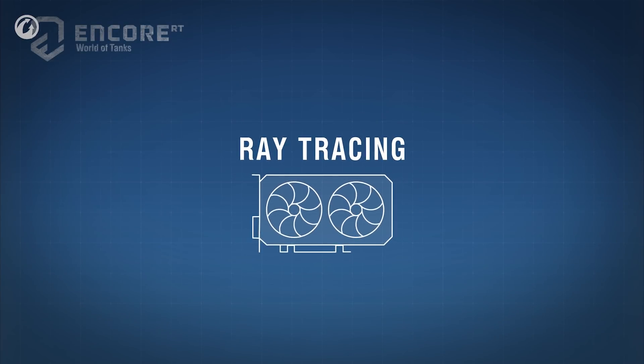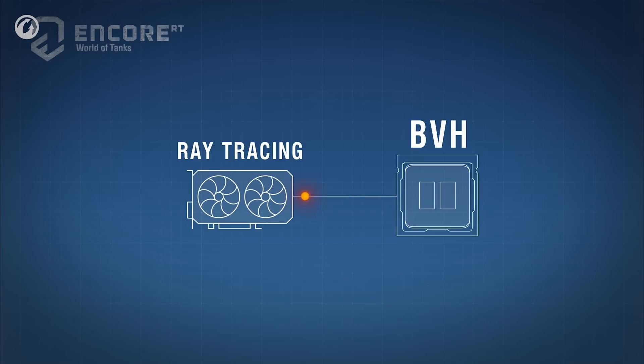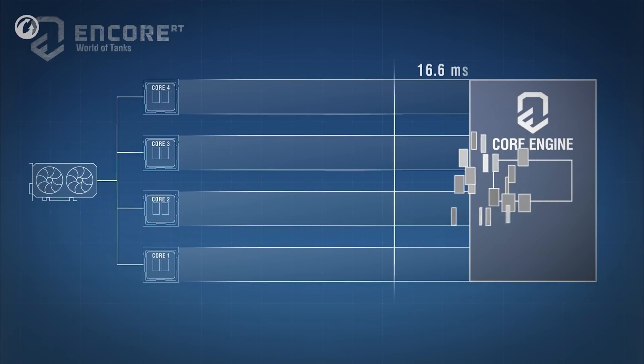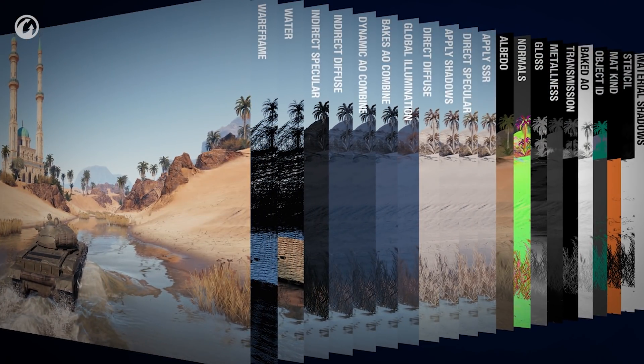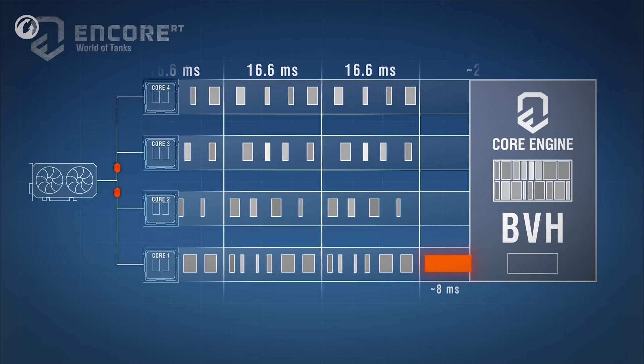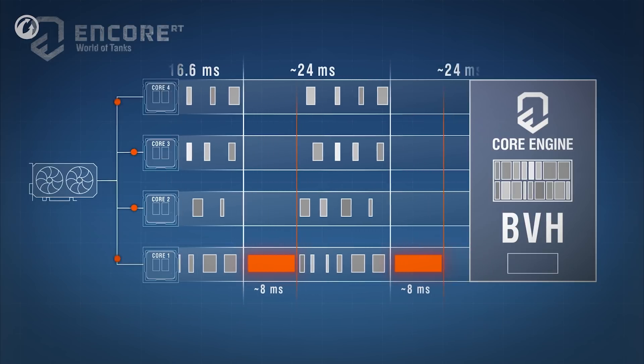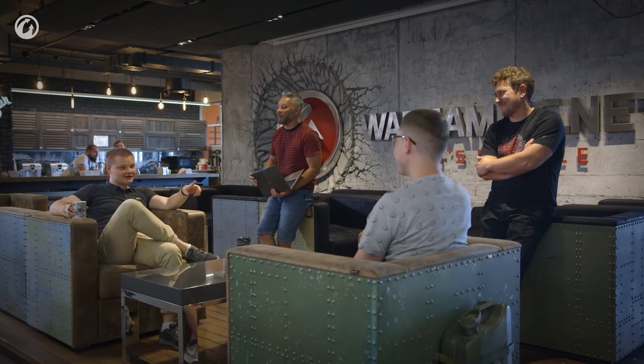The ray tracing is done by the graphics card, and the BVH structure preparation is calculated by the CPU. At 60 frames per second, the frame time takes 16.6 milliseconds — the general time for the whole frame, so we must update all game logic and complete all rendering during this time. Our first implementation of building the BVH structure using the CPU took about 8 milliseconds — half of the whole frame time budget. We couldn't release it with that level of performance. But our partners from Intel offered us their solution.